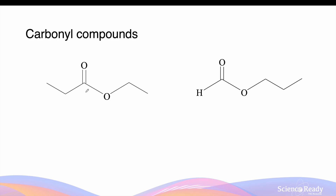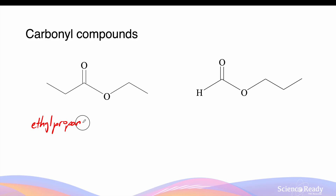Here we have two esters, demonstrated by the characteristic double-bonded O and chain length connected at the oxygen site. We count that there are three carbons next to the oxygen site, indicating that the carboxylic acid reactant when the ester formed was propanoic acid. Similarly, there are two carbons next to the oxygen, meaning the alcohol which was used was ethanol. Combining these names together, we use the ethanol end first — which gives ethyl — followed by the carboxylic acid end, which is propan-, and we finish it by calling it an oate: ethyl propanoate. On the left hand side, this length has one carbon and three carbons on the right. This will be propyl methanoate.